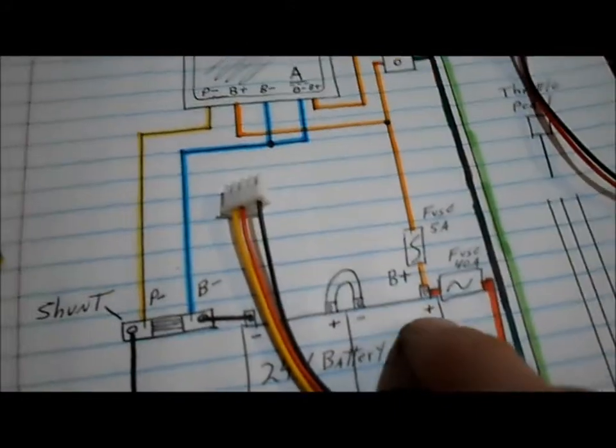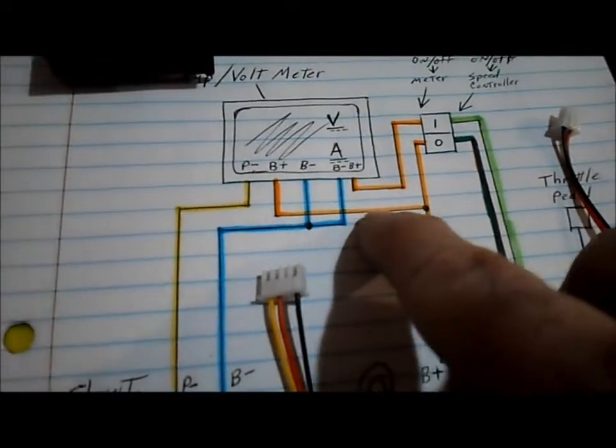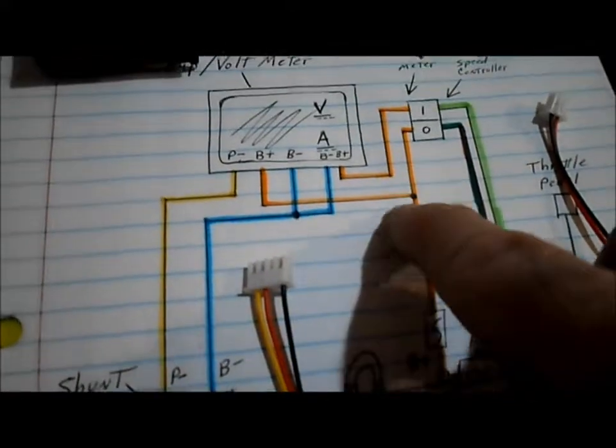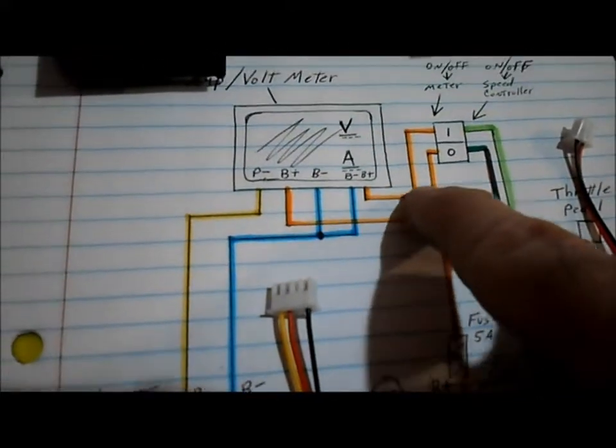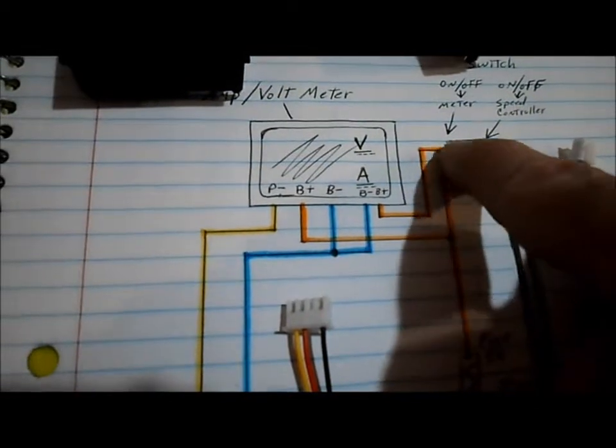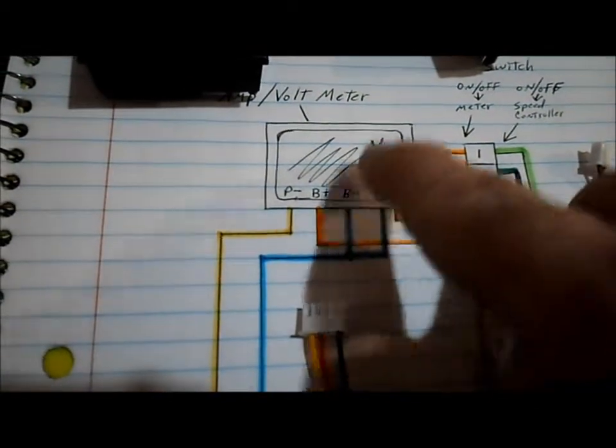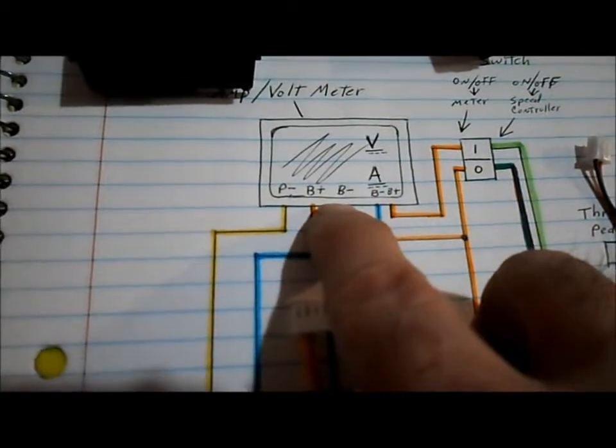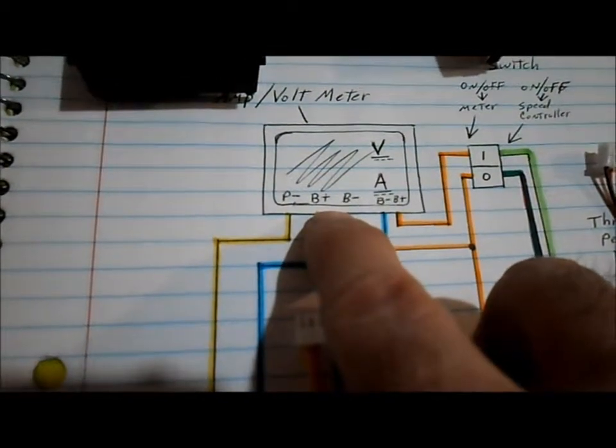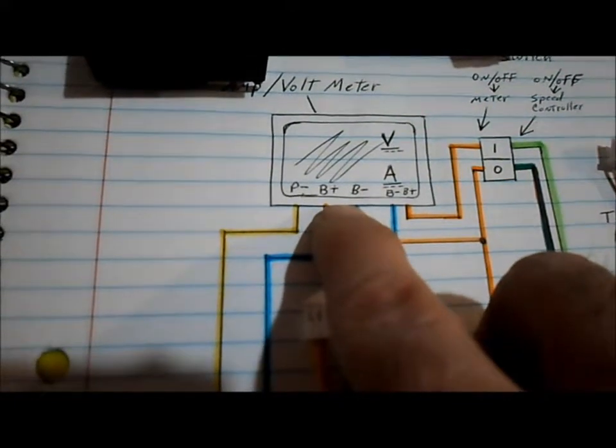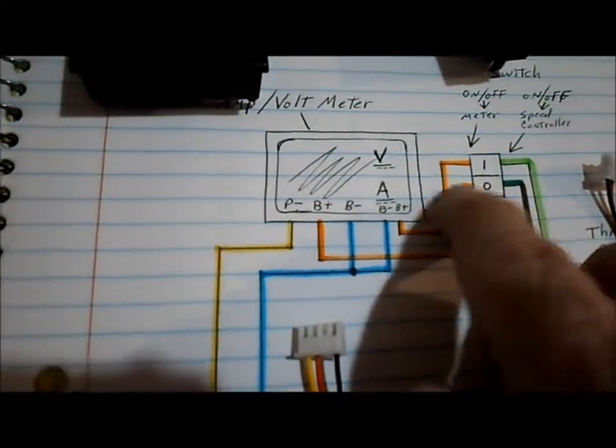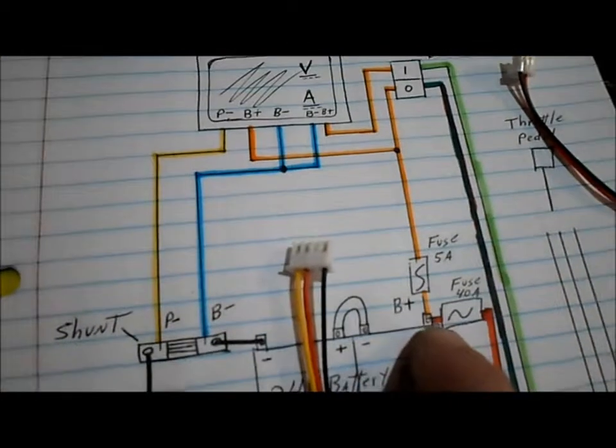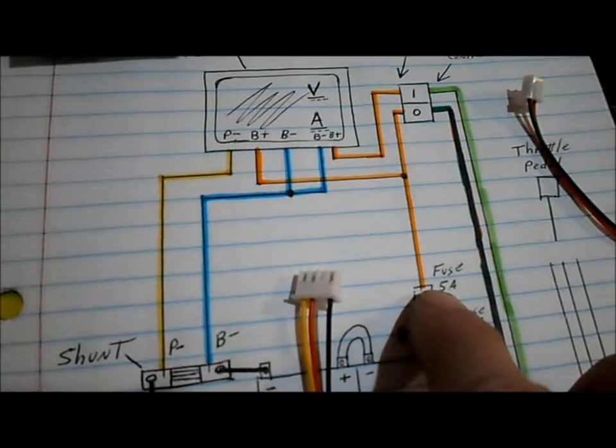So for the meter here, we want straight to the positive of the battery. This is the same positive that goes up to our switch and switches our meter on and off. So B plus for our sensor input and B plus to power up our unit is the same B plus. And that's both protected with a 5 amp fuse.